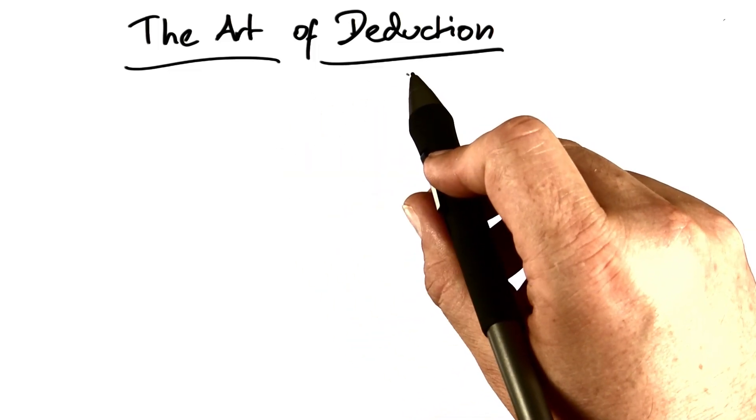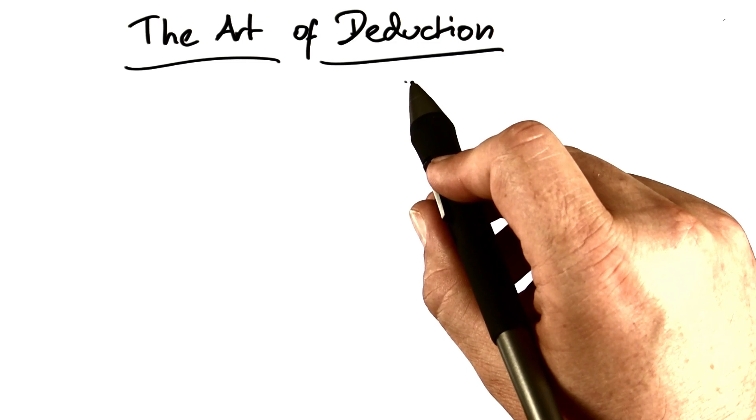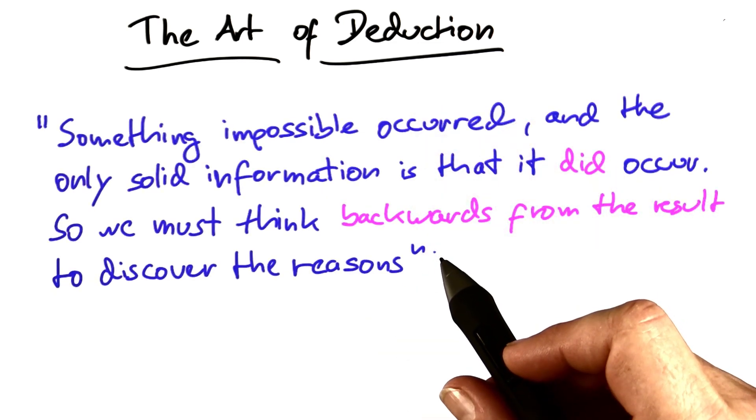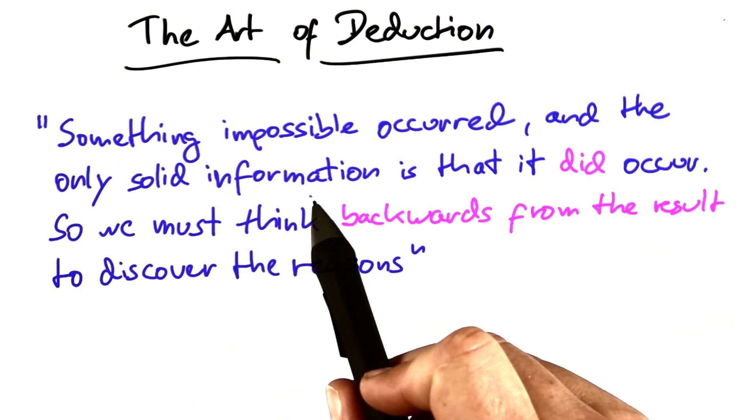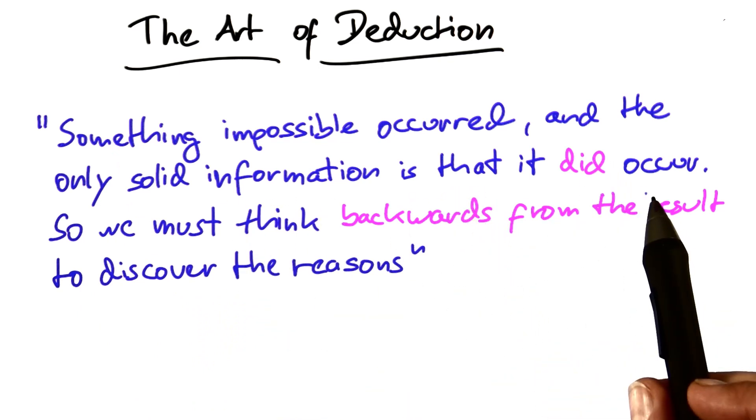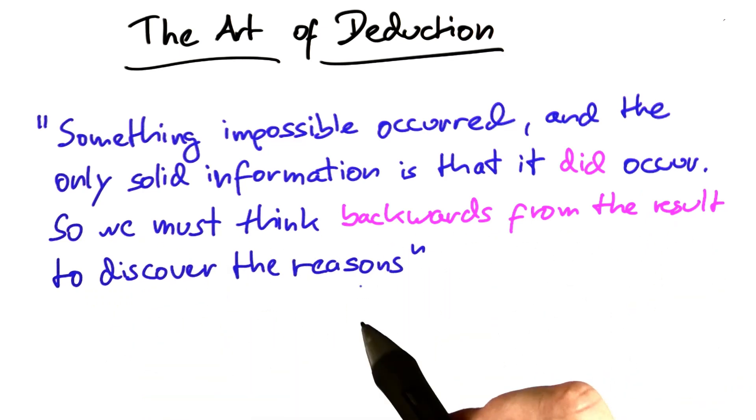Needless to say, Sherlock Holmes would make an excellent program debugger if he were living these days. The problem in front of us can be stated as follows: something impossible occurred, and the only solid information is that it did occur.